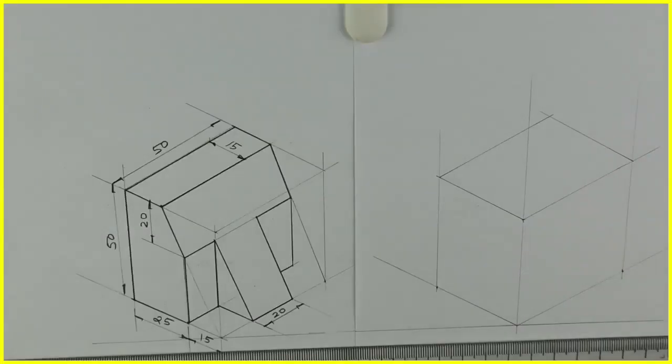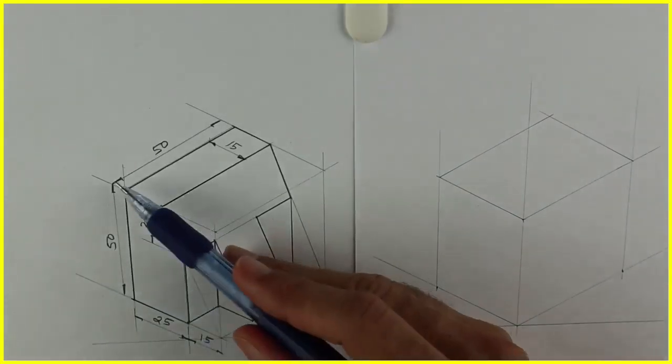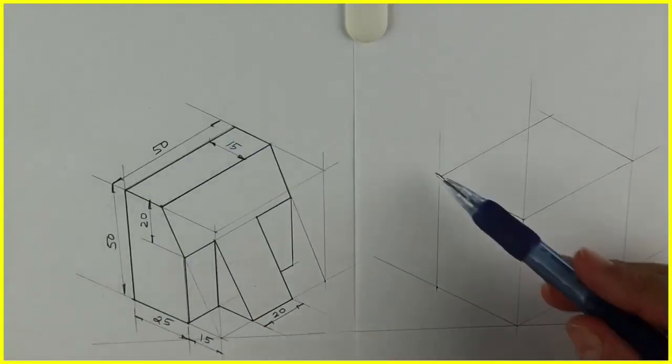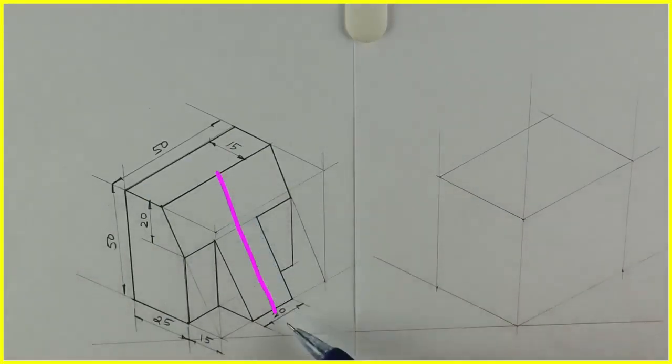Welcome to technical drawing. In this copying ISO, one side they have given 40, height is 50, and the other side is 50. So we'll draw this layout. After drawing this layout, if you see there is a slope.